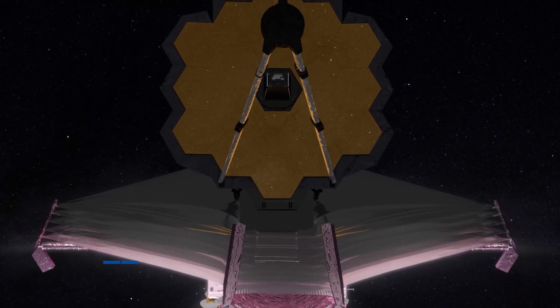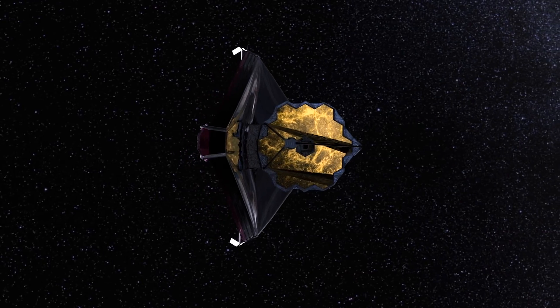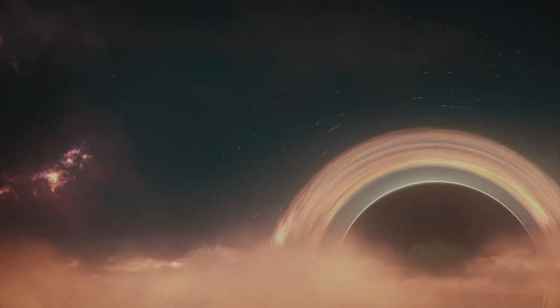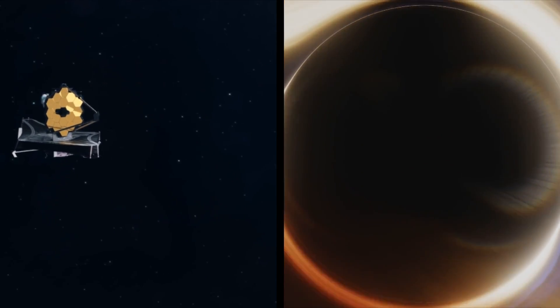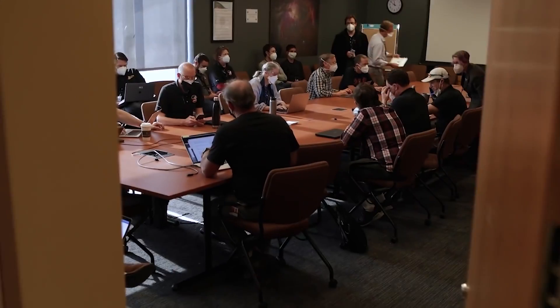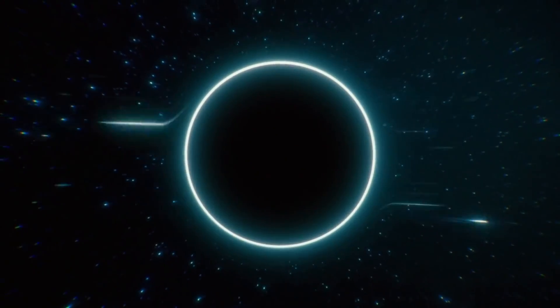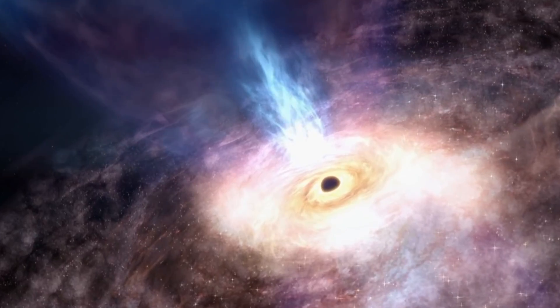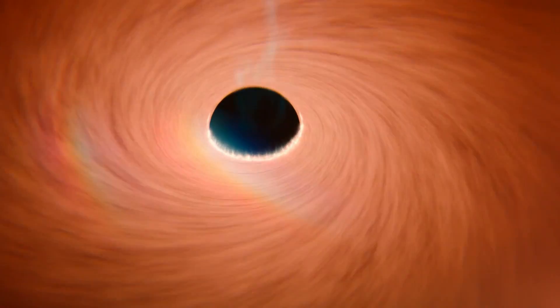Hold onto your seats because the James Webb telescope has just uncovered something that will leave you speechless. In a groundbreaking discovery that will revolutionize the way we understand black holes, the JWST team of scientists and astronomers recently took on the challenge of examining the inscrutable void of a black hole with the world's most powerful telescope. After months of observing and analyzing data, the team has made a discovery that has left them all reeling with awe and excitement. Join us in today's video as we unravel the secrets of what lies within a black hole as seen through the lens of the James Webb telescope.